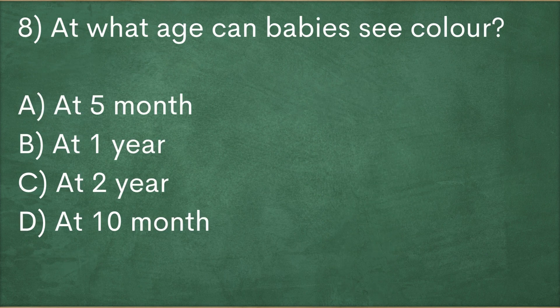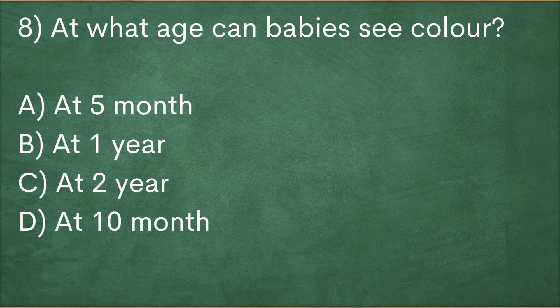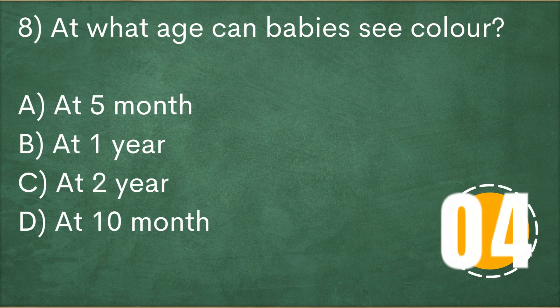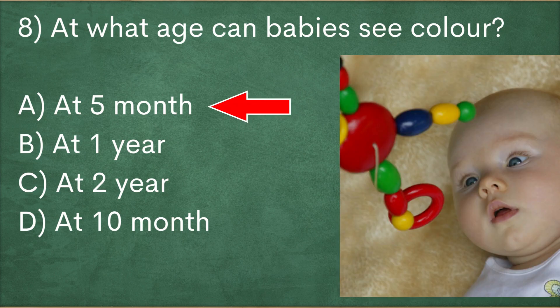At what age can babies see color? At 5 month, at 1 year, at 2 year, at 10 month. Answer is at 5 month.